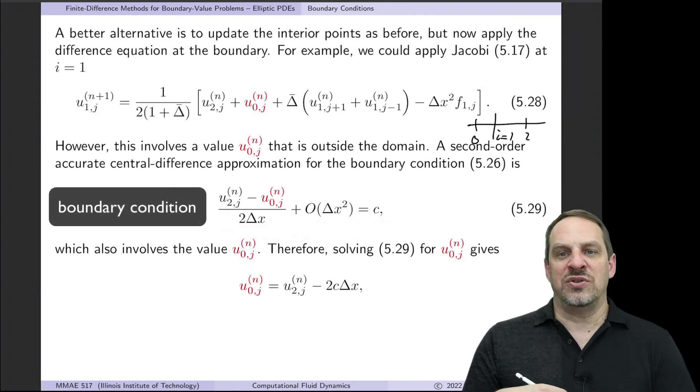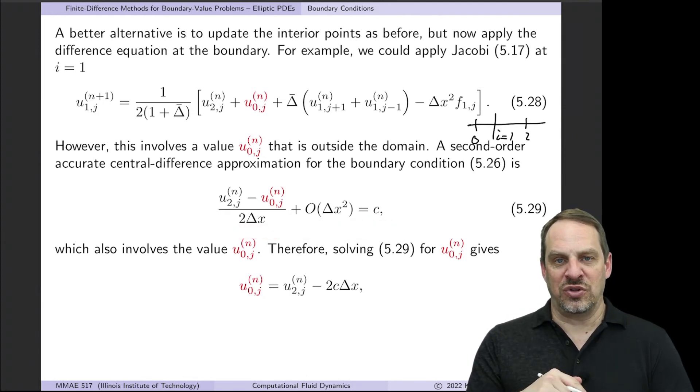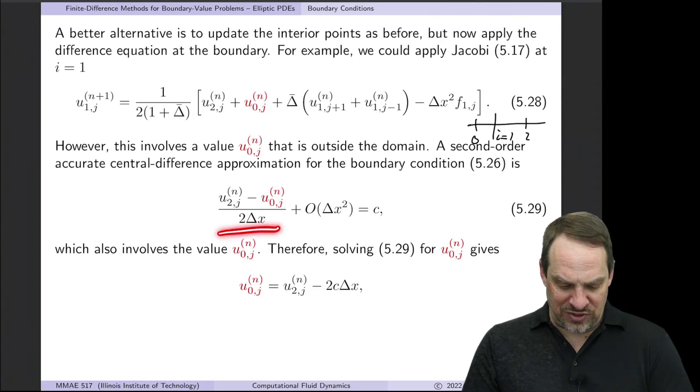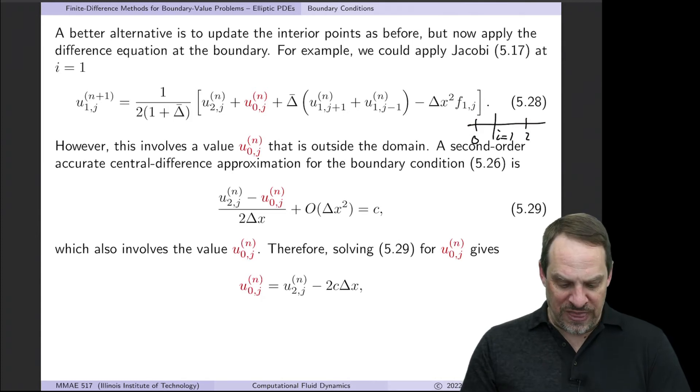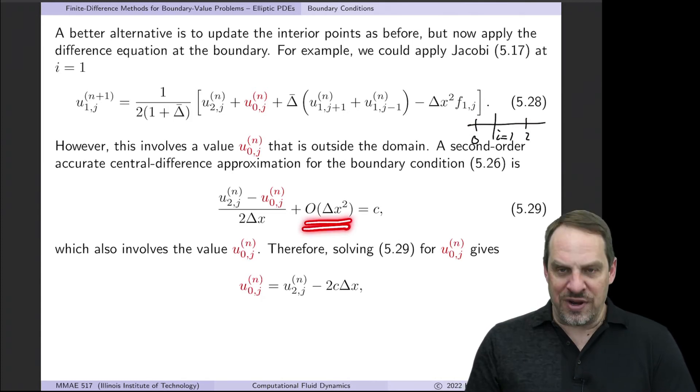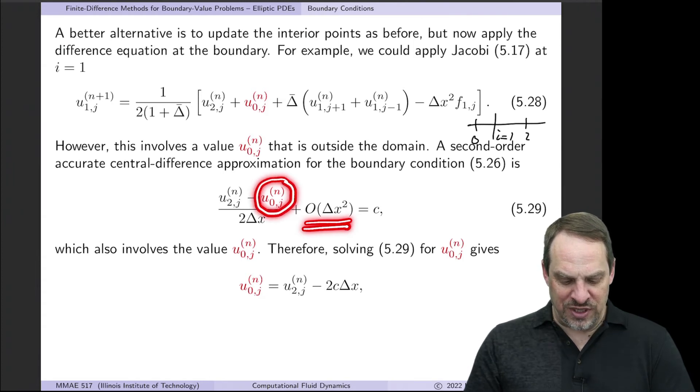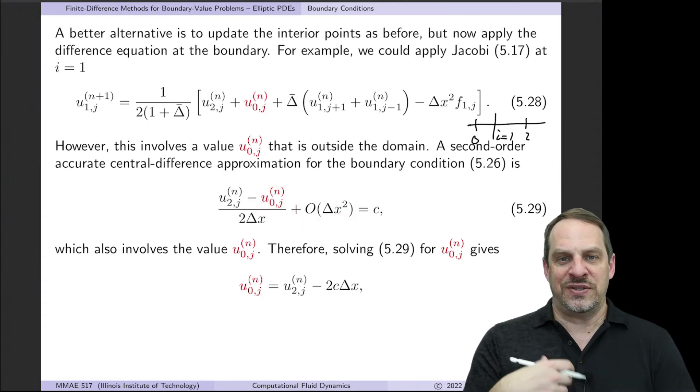We now use a second order accurate central difference approximation for the partial U partial X derivative. That's what you see right here. So it's U2J minus U0J divided by 2 delta X. So this point minus this point divided by the distance between them. It is now second order accurate instead of first order accurate. But you'll notice it again involves this point that's outside the domain.